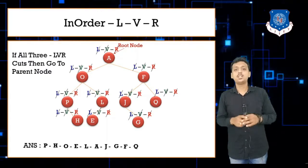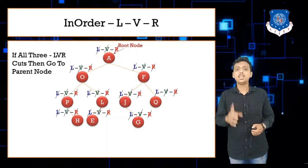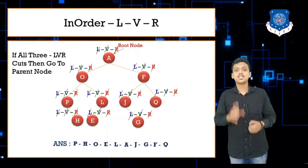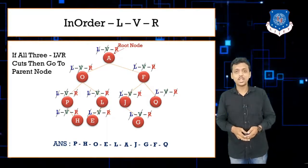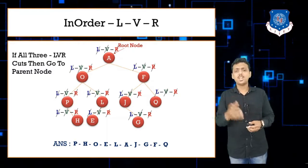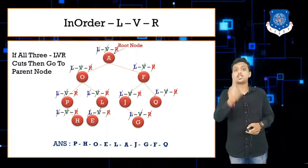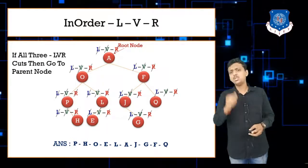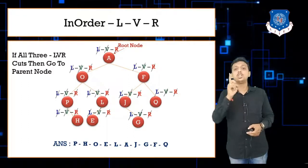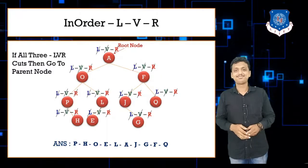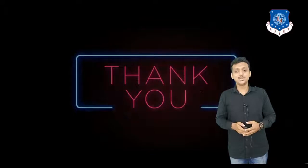That is in-order traversal — you need to do L, V, and R, that means left, visit, and right. Just try such examples at home. Take any tree, make any tree, but make sure it must be a binary tree. To confirm it is a binary tree, make sure that the number of children should not be more than two. That is it for today's lecture. Thank you so much, students.